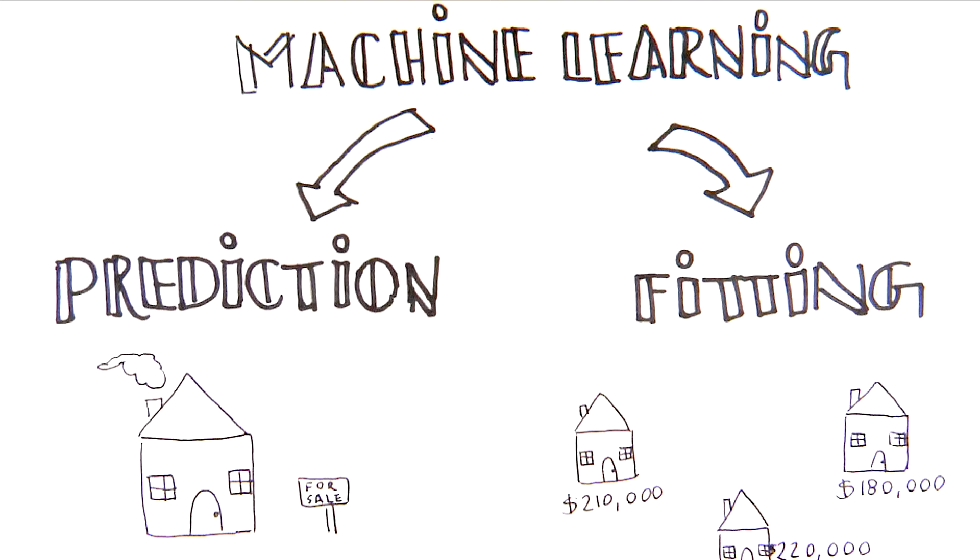In the housing price example, fitting would involve showing the model several houses which have sold and their actual selling prices. After fitting to this data, the model would be better at predicting the price of unsold houses.